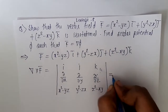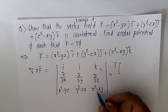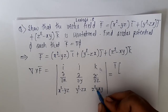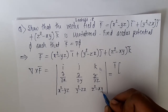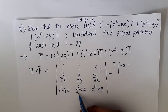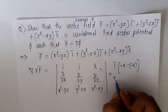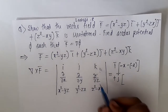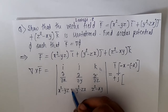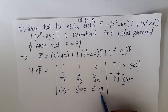It equals i times [del/dy of (z² - xy) minus del/dz of (y² - zx)]. The derivative of z² with respect to y is 0, and derivative of -xy with respect to y is -x. Derivative of y² with respect to z is 0, and derivative of -zx with respect to z is -x. Then minus j times [del/dz of (x² - yz) minus del/dx of (z² - xy)]: derivative of z with respect to z is 1, giving -y, minus derivative of z² minus x·(derivative is -1) giving -y.